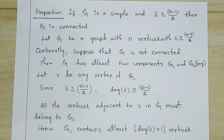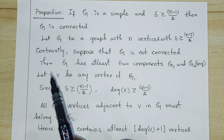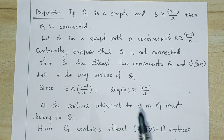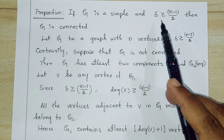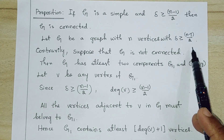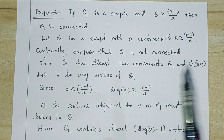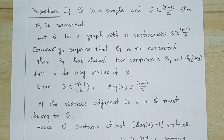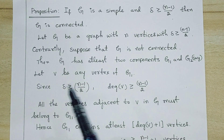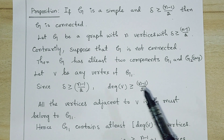A simple graph has at most n(n−1)/2 edges. We will prove this by contradiction. Let G be a graph with n vertices and minimum degree δ ≥ (n−1)/2. Suppose, contrarily, that G is not connected. This means G has at least two components — call them G1 and G2.